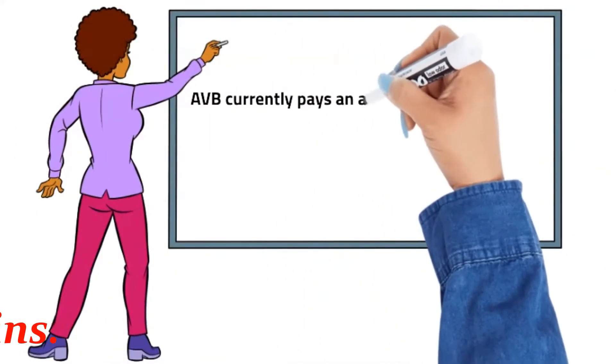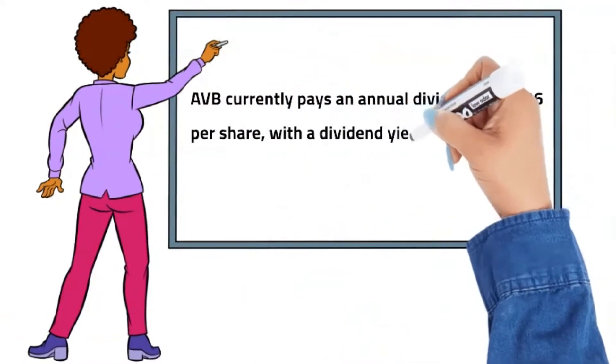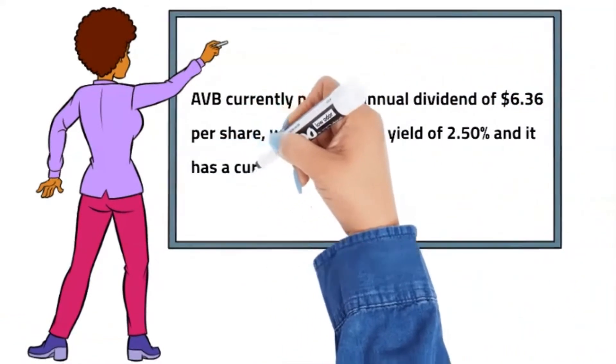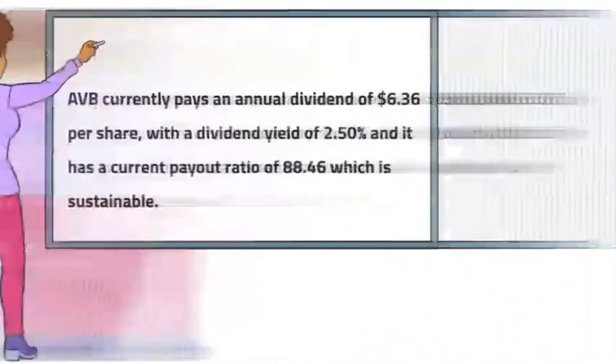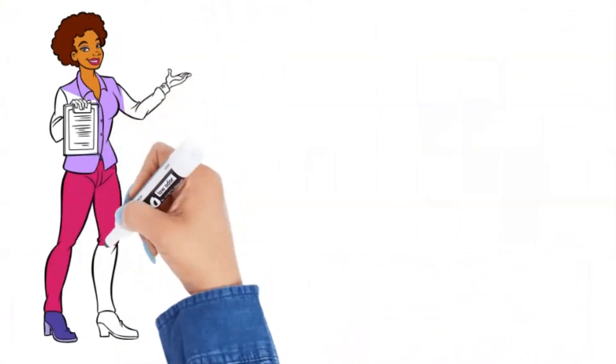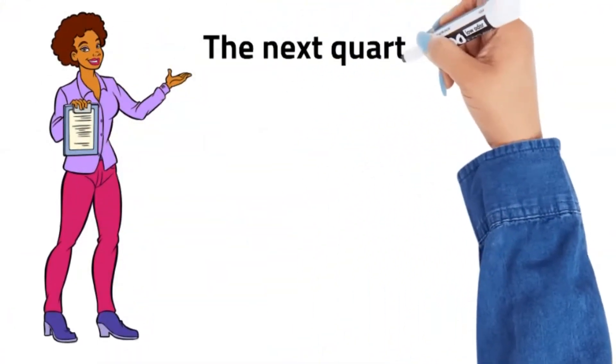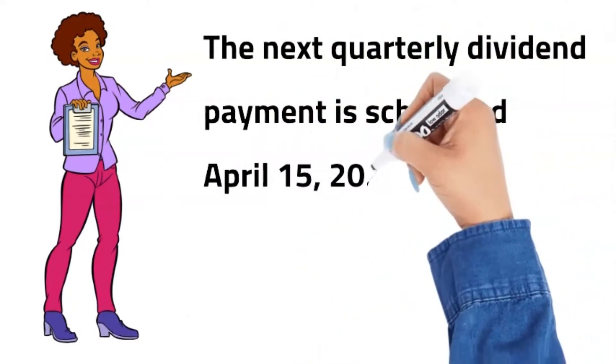AVB currently pays an annual dividend of $6.36 per share with a dividend yield of 2.50% and it has a current payout ratio of 88.46%, which is sustainable. AVB has a quarterly dividend distribution frequency and an 11-year track record of dividend increases. The next quarterly dividend payment is scheduled for April 15, 2022.